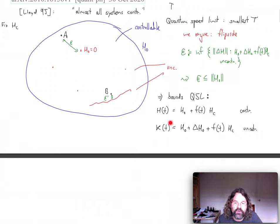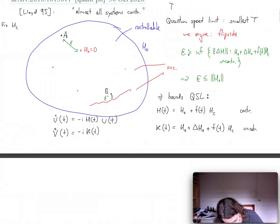Then if you start evolving with either of those two systems, nature needs time to distinguish. And you can make this more precise by looking at the solution of the Schrodinger equation. So you take the solution of the Schrodinger equation for the controllable system, and you take the solution V of t of the uncontrollable system. So these are the corresponding time evolution operators.